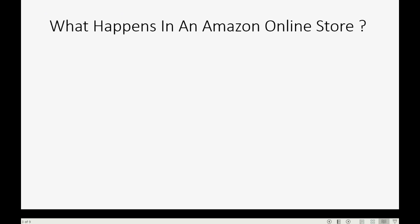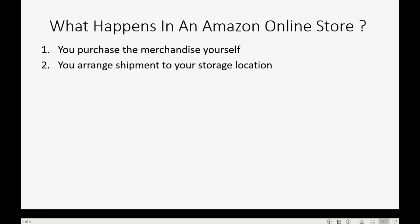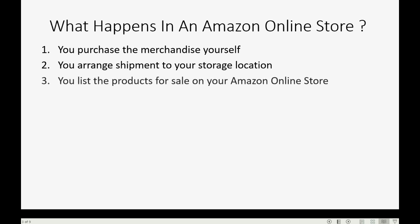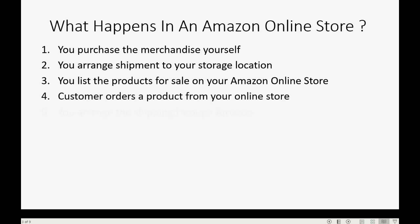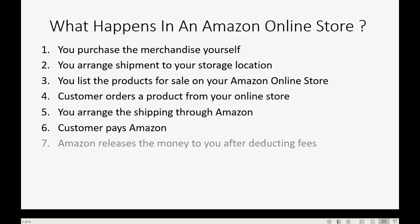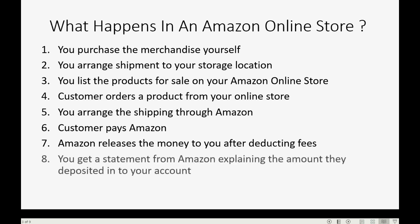What exactly happens in an Amazon online store? You purchase the merchandise yourself, independently of Amazon, arrange shipment to a storage location, and list the products for sale on your Amazon online store. The customer orders a product, you arrange shipping through Amazon, the customer pays Amazon, and Amazon releases the money to you after deducting fees. Then you get a statement from Amazon explaining the amount of money they deposited into your account.